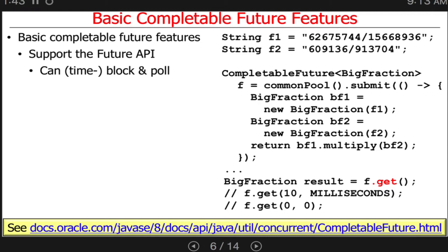Down here you can see there are a couple of alternatives. You can do timed gets — this will wait up to 10 milliseconds. And this one will just poll: it'll say, is the result ready? If the answer is no, it'll return right away; otherwise it'll give you the result. So those are some of the things you can do with the basic features.